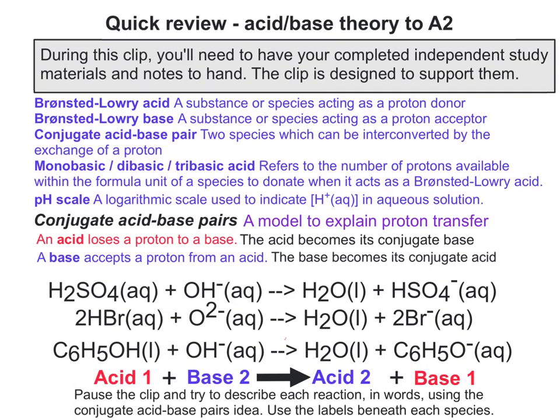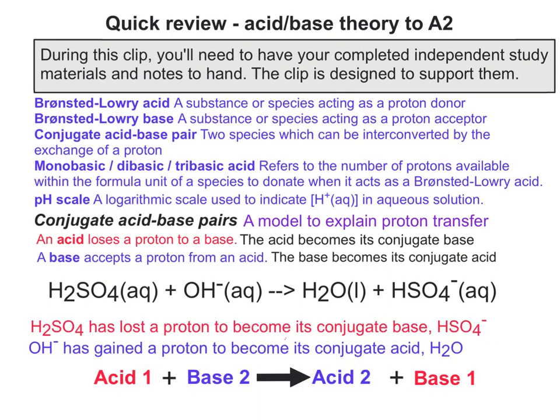Pause the clip and try this exercise: take each of these equations and, in words, use the conjugate acid-base pairs idea to explain what happens to each species. In the first one, sulfuric acid has lost a proton to become its conjugate base, the hydrogen sulfate ion HSO4-, and OH- has at the same time gained a proton to become its conjugate acid, H2O. The proton in each of the sentences is the same proton — that's the important idea.